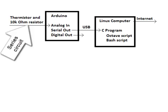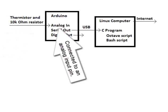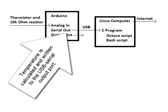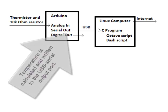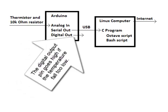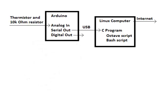We have a series circuit with a thermistor and a 10k ohm resistor connected to an analog input pin. Temperature is calculated and written to the USB serial output port. A digital output pin goes high if the temperature falls too low.